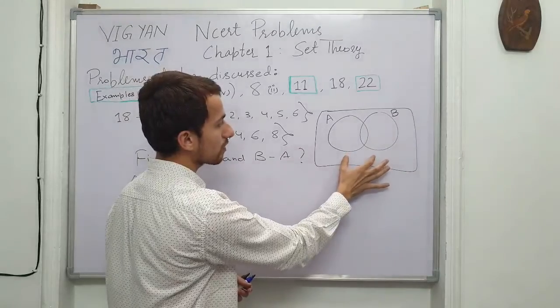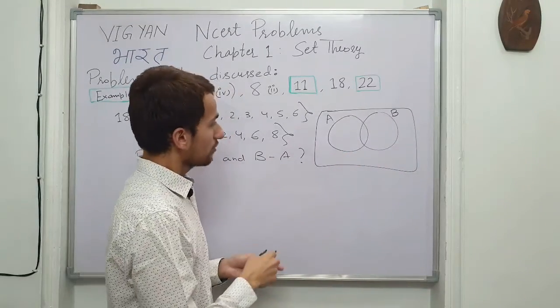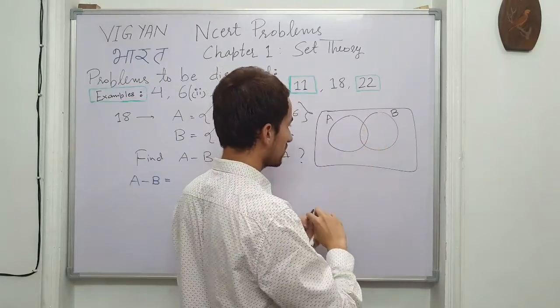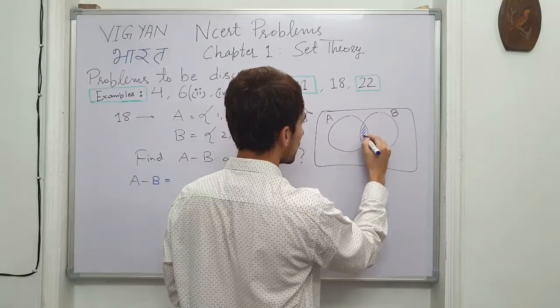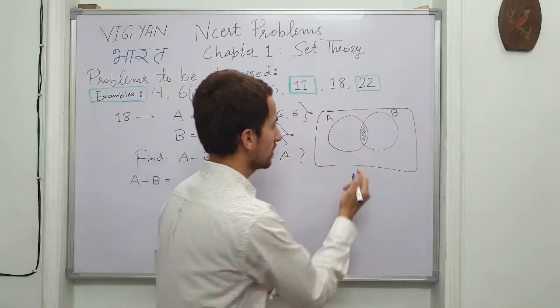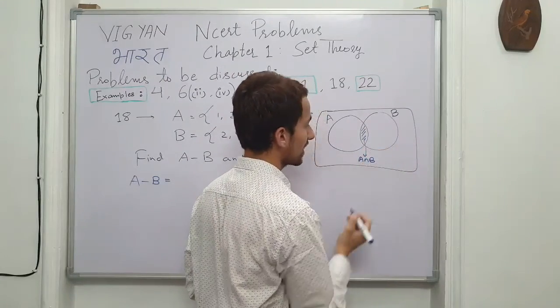So if we try to understand from this definition in terms of Venn diagrams, we are given two sets A and B. This region is nothing but the intersection A-intersection B, all the elements which are common to both A and B.